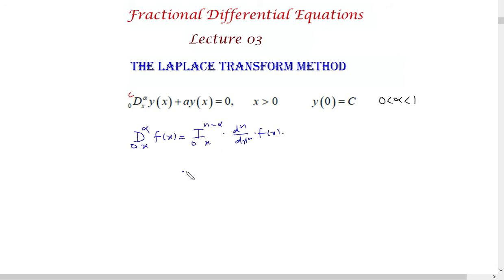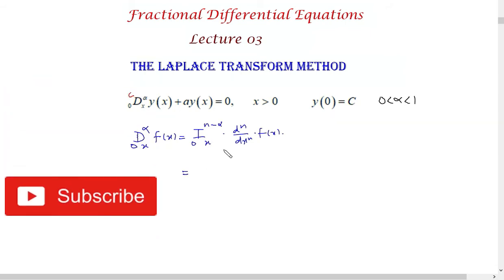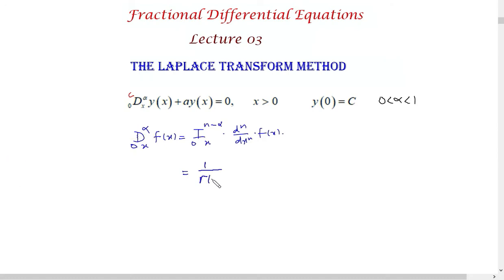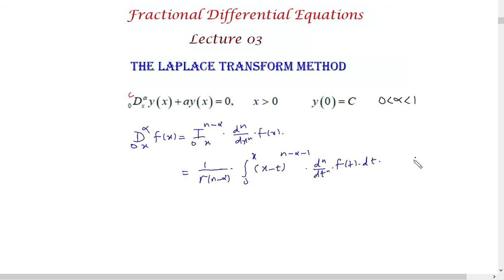Here, I stands for the Riemann-Liouville fractional integral. Using that notation, this becomes 1 over Γ(n−α), then the integral from 0 to x of (x−t)^(n−α−1), and then the nth derivative d^n/dt^n of the function f(t) dt. Here alpha lies between n−1 and n. This is the definition of the Caputo fractional derivative which is being used in this differential equation.